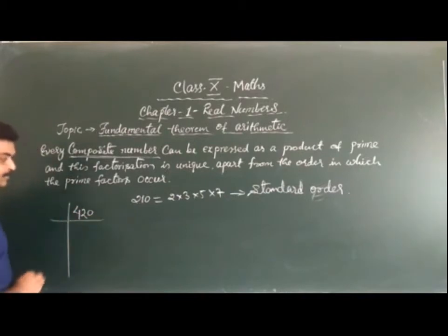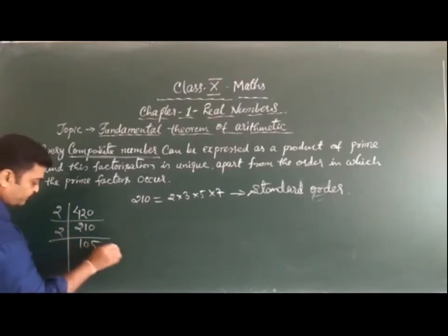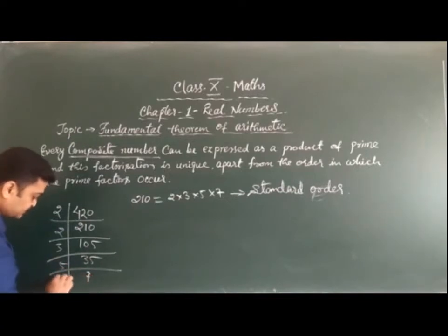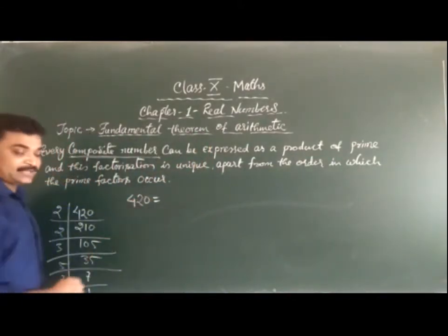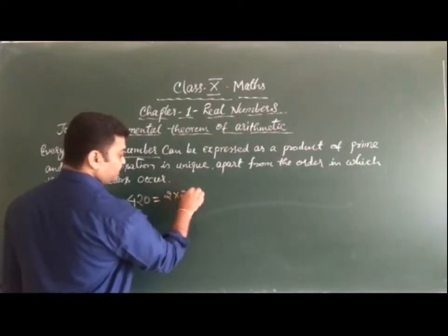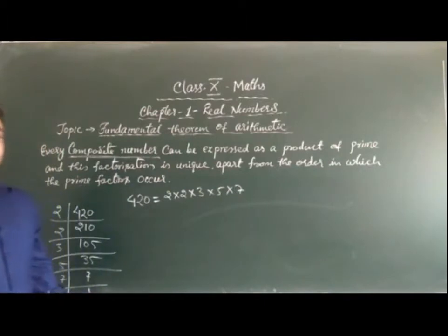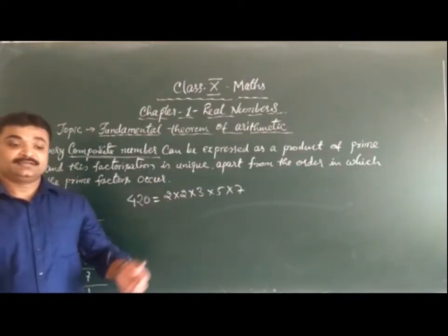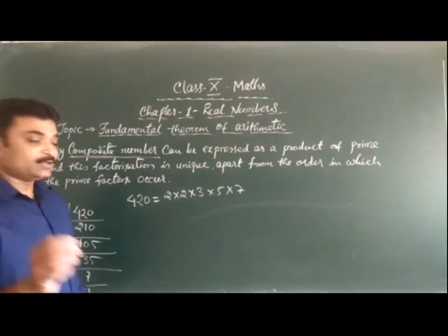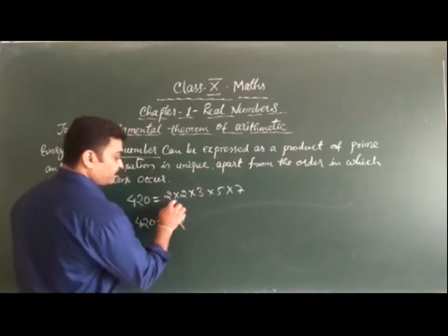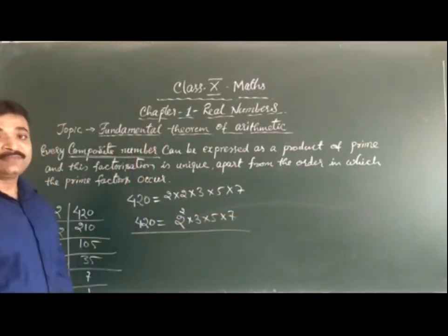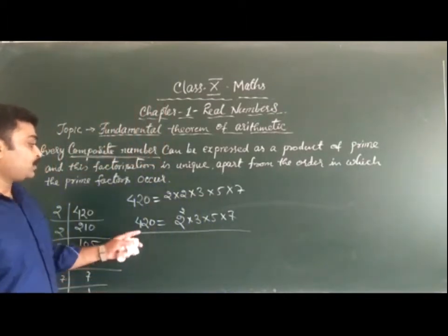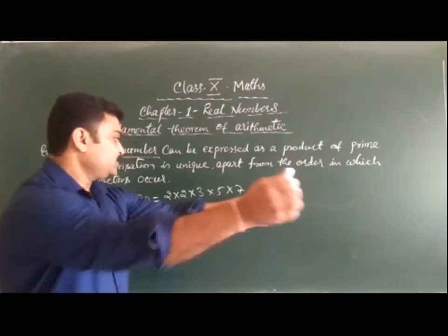One more example: suppose 420. Prime factorization gives 2, then 210, then 2, then 105, then 3, then 35, then 5, then 7. So 420 can be expressed as 2 × 2 × 3 × 5 × 7. Since 2 appears twice, we write it as 2² × 3 × 5 × 7. In this way we express the factorization of any number.